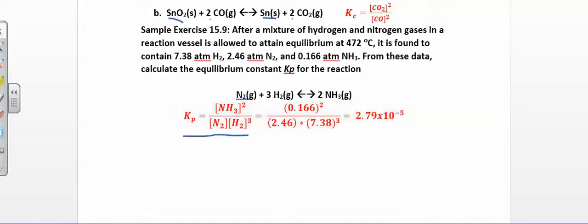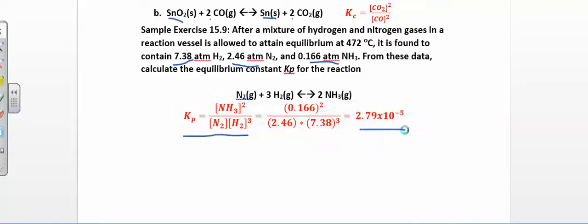Then just plug in those numbers. Ammonia is 0.166 — put that in and don't forget to square it — then multiply by hydrogen and nitrogen. When you work all that out, you get your Kp. Remember, K doesn't have any units; K is unitless.